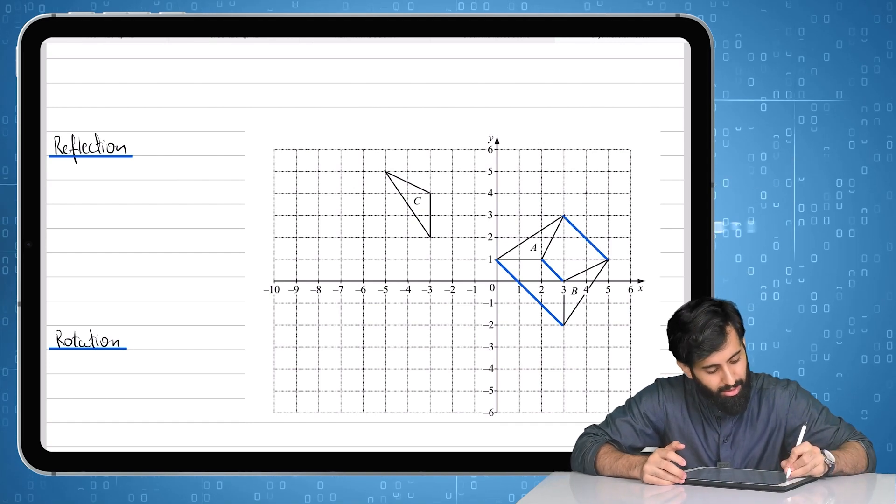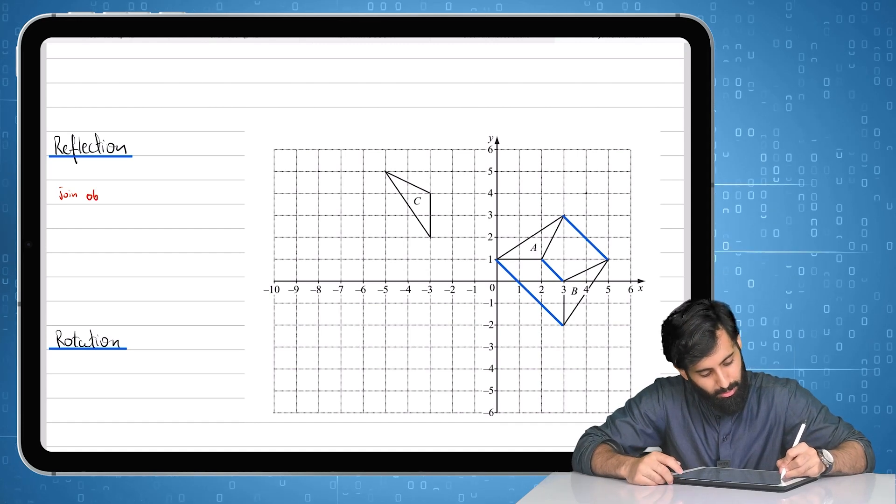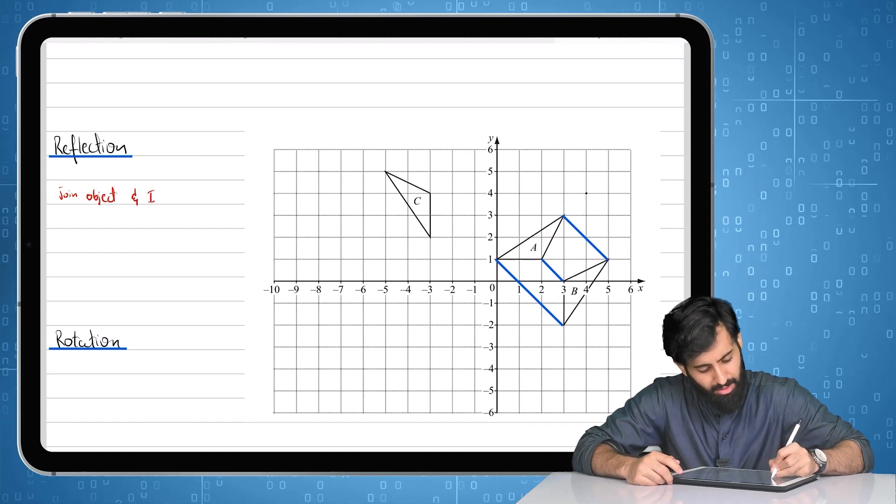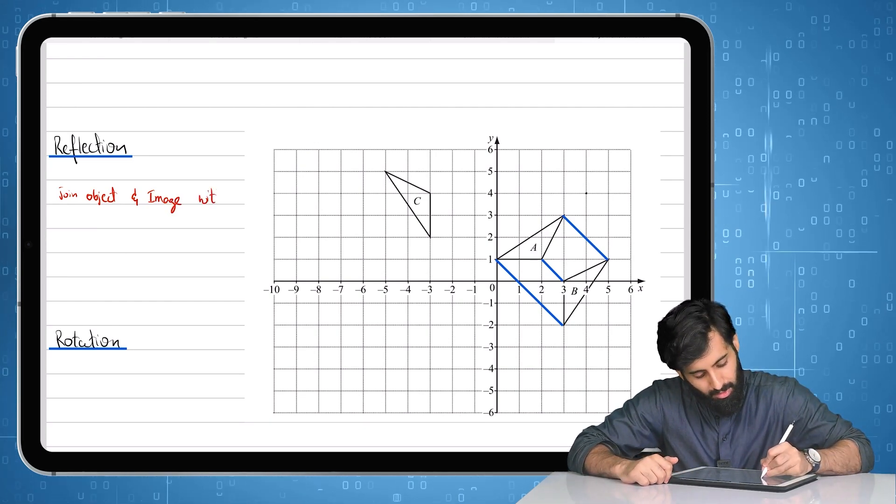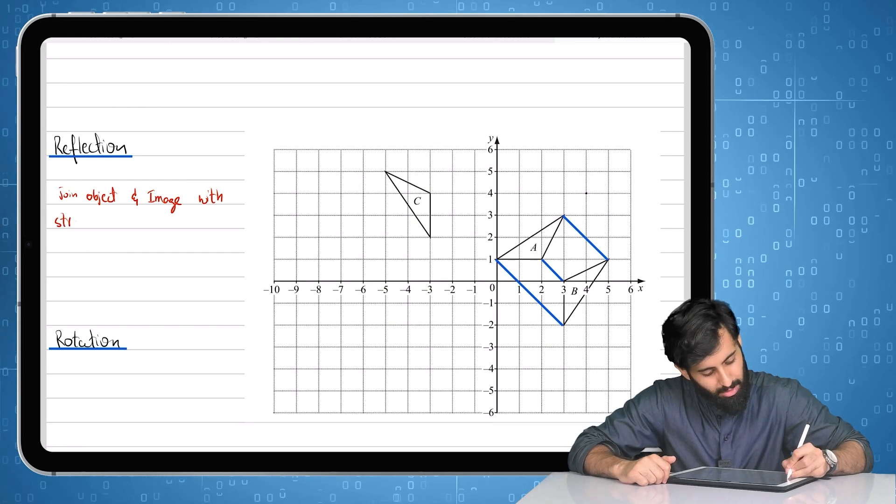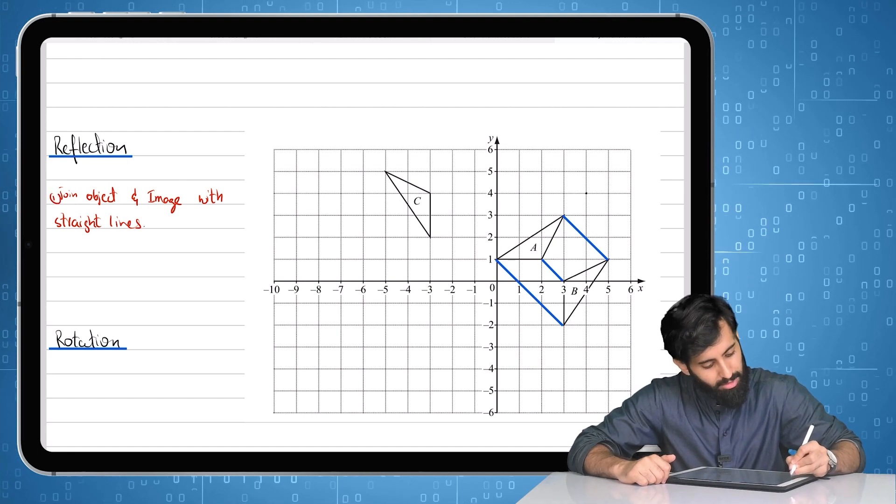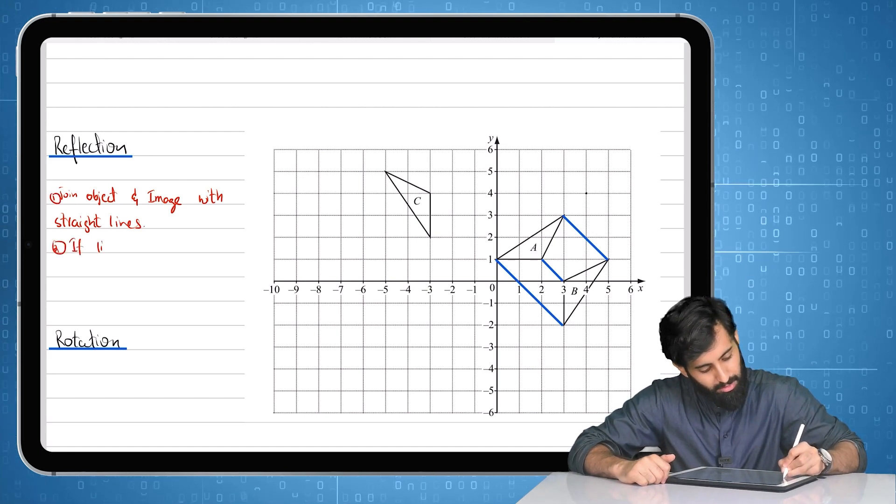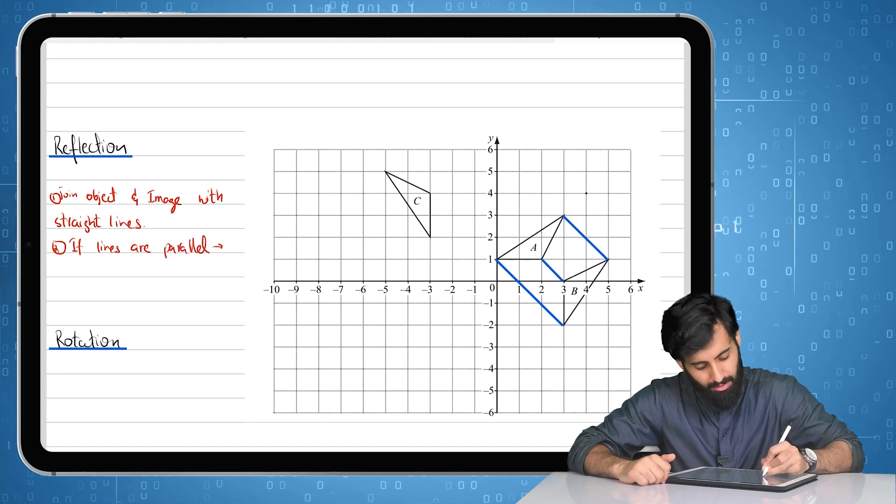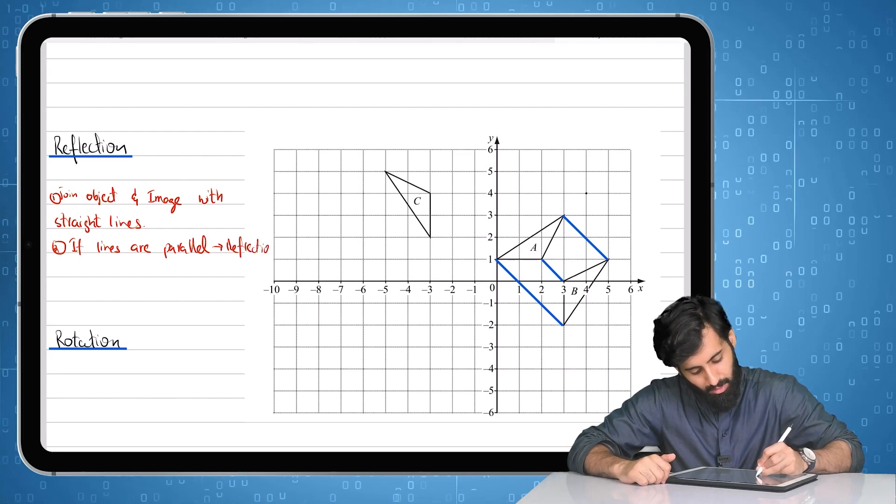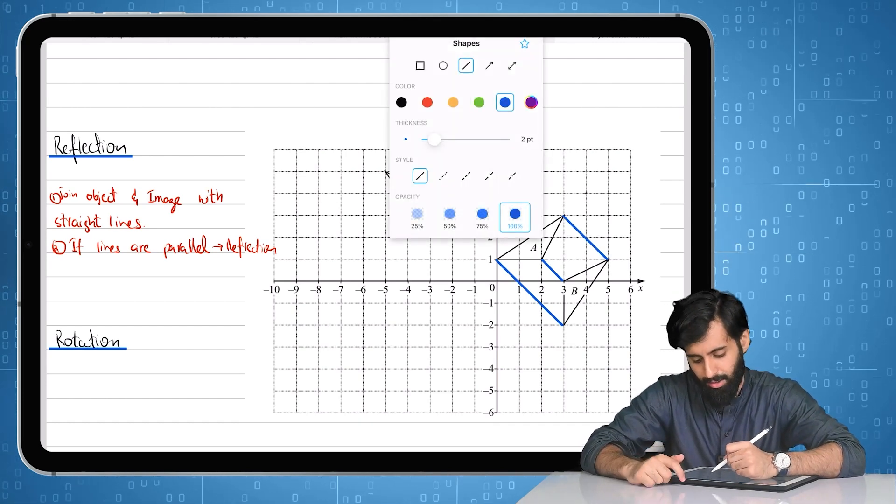I should write it over here: that you join, in fact join object and image. I'm just going to write it in a very concise and short manner. With straight lines. That's step one. So here's step one. Step two is that if lines are parallel, then it's definitely a reflection. Now what's the other case? What happens when it's not a reflection?